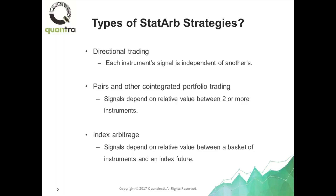The other kind of statistical arbitrage strategy is closer to what we are going to discuss — that's pairs and other co-integrated portfolio trading. In this type of trading, the signals depend on the relative value between two or more instruments. That's why there's the term 'pairs,' but it doesn't have to be just two instruments. For example, it could be an entire portfolio such as five technology stocks — Apple, Google, Amazon, Microsoft, Facebook — and if they are found to be co-integrated, we can trade them using this type of strategy.